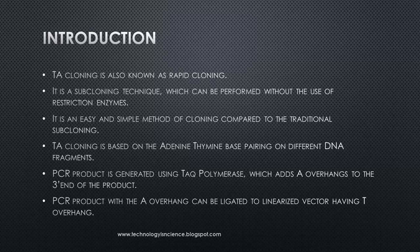TA cloning technique is based on the adenine-thymine base pairing on different DNA fragments. In this method, a PCR product is first generated using a Taq DNA polymerase which adds an A overhang to the 3' end of the product, and which is then ligated to a linearized vector having T overhangs.